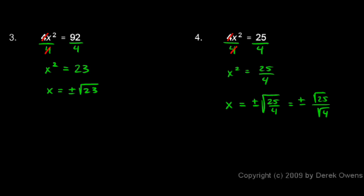And both of those are perfect squares. The square root of 25 is simply 5, and the square root of 4 is 2. So I have plus or minus 5 halves. And you could write that as a fraction or as a decimal. You could write plus or minus 2.5.